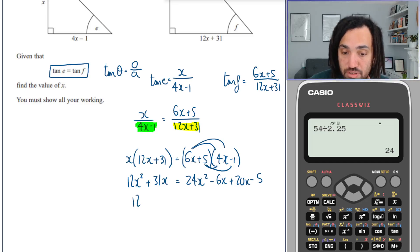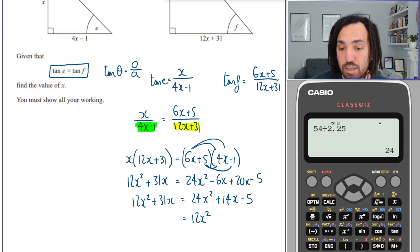Let's simplify this and collect those like terms on the right hand side to get 24x squared plus 14x minus 5. Let's subtract 12x squared from both sides, so the 24 becomes 12. And let's also subtract 31x from both sides, so that becomes minus 17x minus 5.